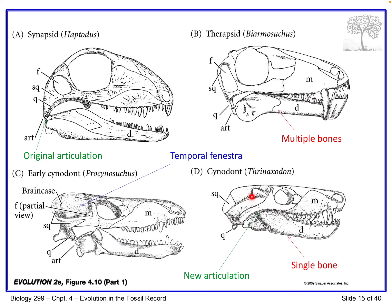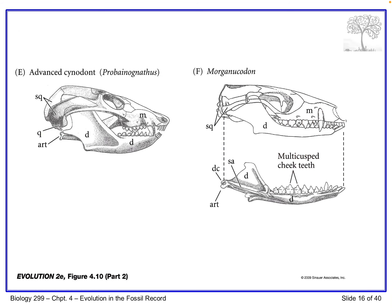Still later on, we see a later cynodont. The temporal fenestra is a space right in between the cheekbone and the skull, the braincase. We still see the quadrate and the articular working against one another, but now we have a new articulation located inside of that cheekbone. The dentary is now a much larger part of the overall lower jaw.